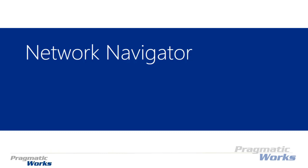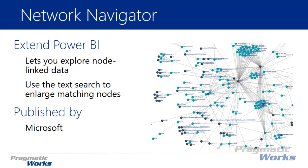Welcome back to the Power BI Custom Visuals course. In this module we're going to be looking at the Network Navigator Visual. The Network Navigator Visual is useful whenever you want to see a flow of how something went from one source to a destination. The example we're going to see is looking at some fake blog data — specifically where people went from one page to the next page, whether that's the home page, a blog post, or an About Me page. I want to track the fluency of how someone goes from one place to another.